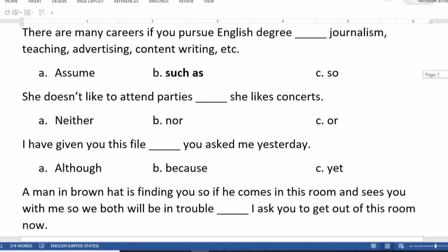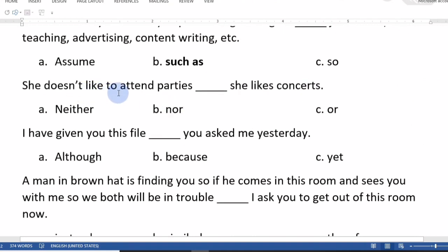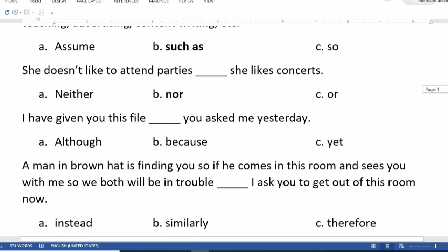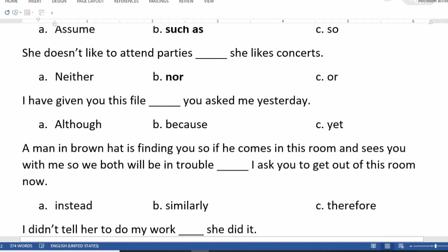She doesn't like to attend parties, she likes concerts. The options are neither, nor, or or. If the first statement is negative then you will use nor. So you will put nor over here.